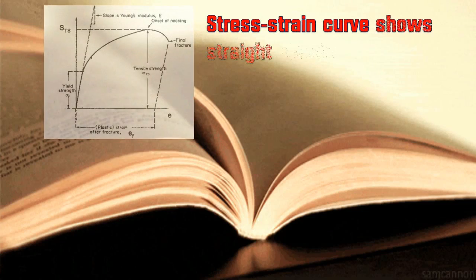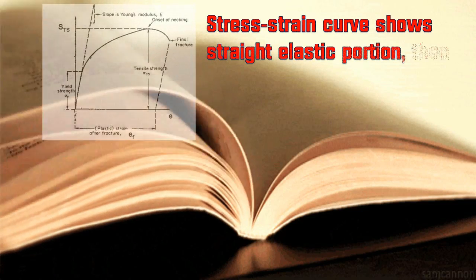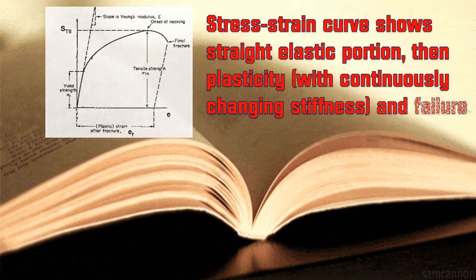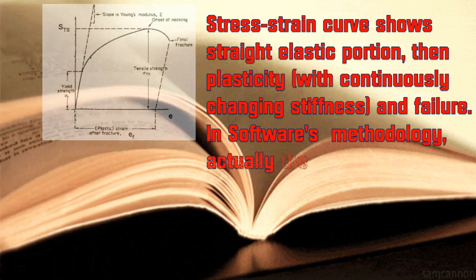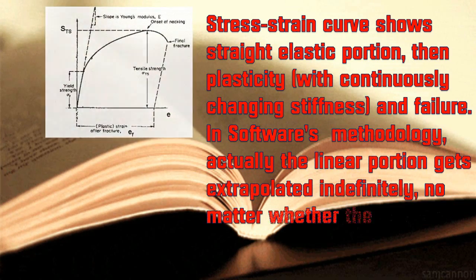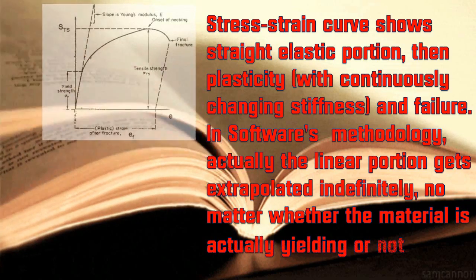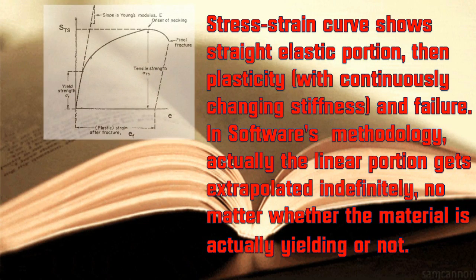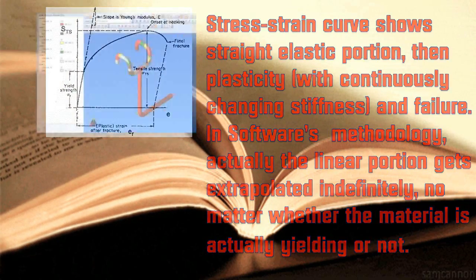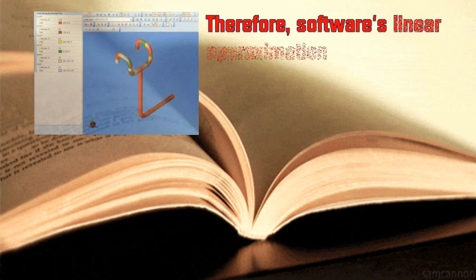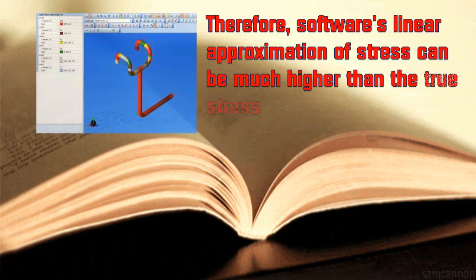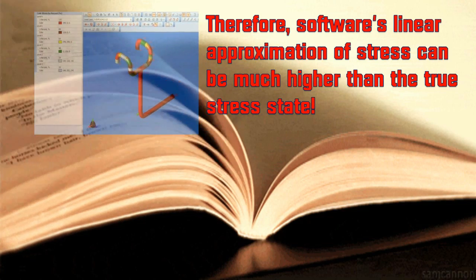The stress-strain curve shows a straight elastic portion, then plasticity with continuously changing stiffness, and finally failure. In the software's methodology, the linear portion gets extrapolated indefinitely, no matter whether the material is actually yielding or not. Therefore, the software's linear approximation of stress can be much higher than the true stress state.